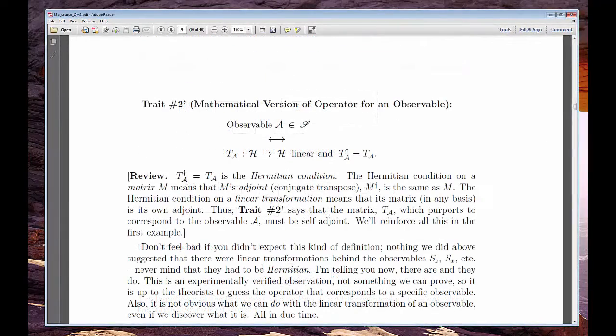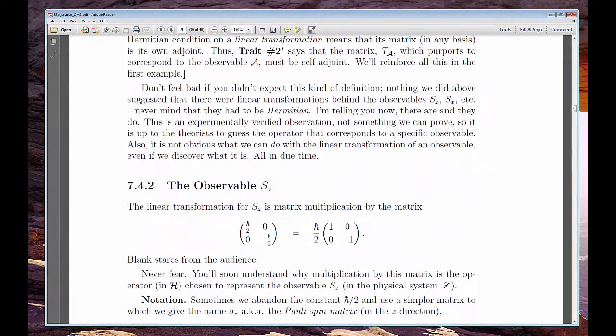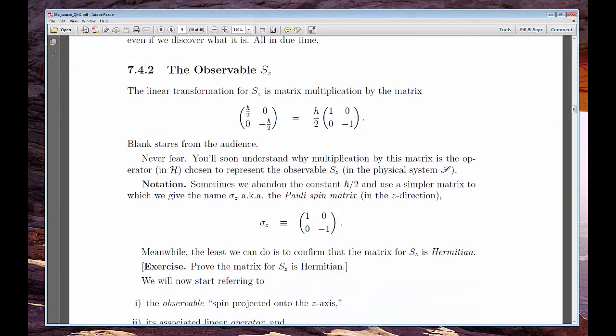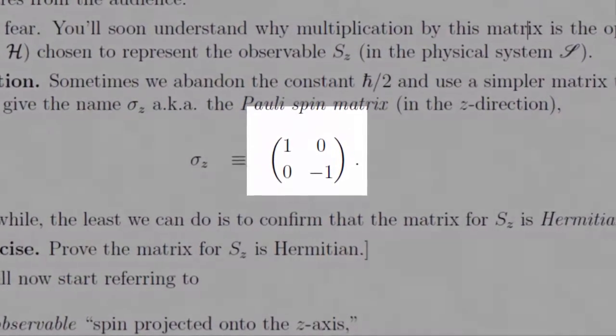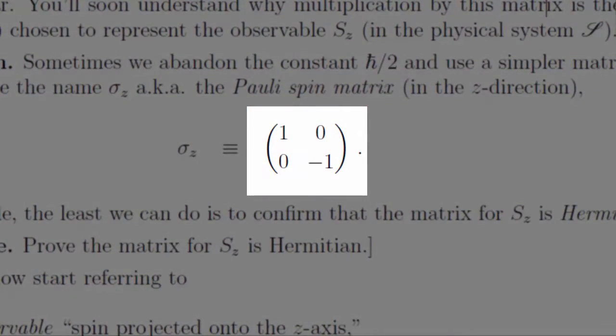We'll meet the most important observable, SZ, the Z component of an electron's spin. But before you freak out, remember, even though I talk about electrons and spin, all you really need is the simple 2x2 matrix for SZ. We're blissfully insulated by our warm, safe Hilbert space.